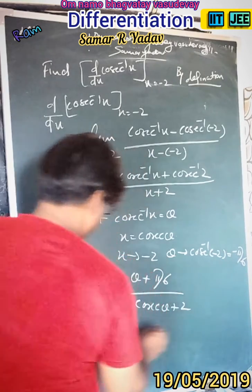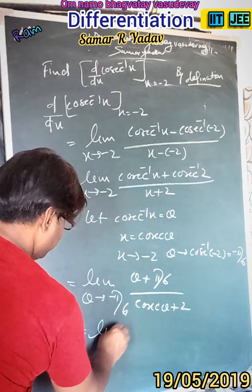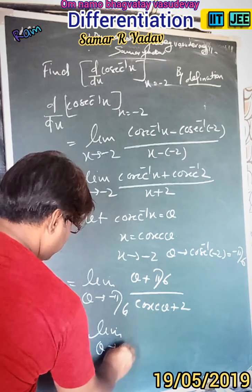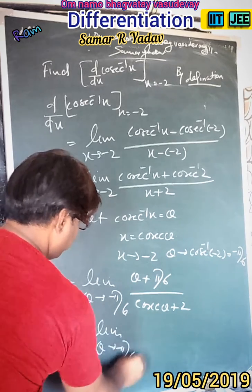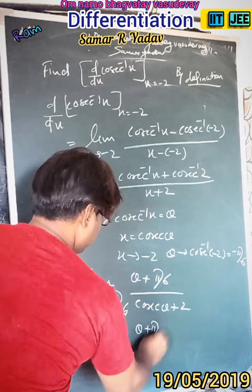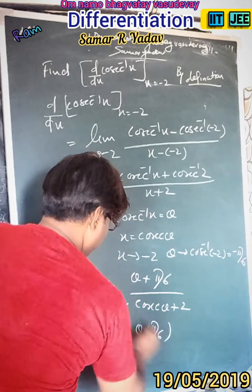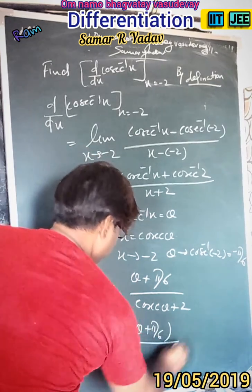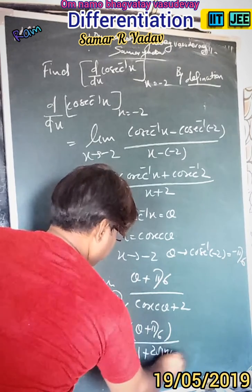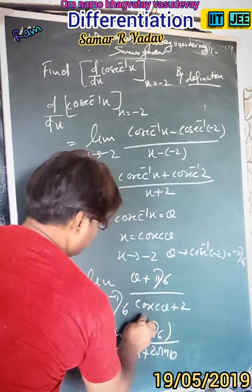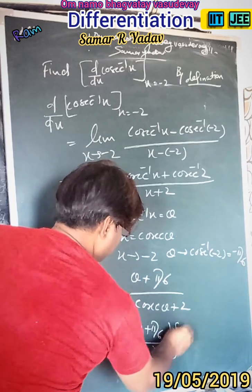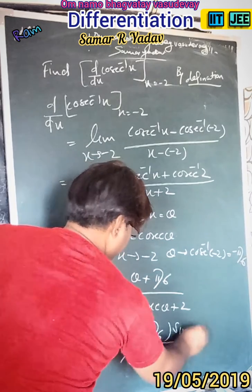This equals limit as θ tends to -5π/6 of [θ + 5π/6] upon [1 + 2sin(θ)], using the identity that cos(θ) + 2 = 1 + 2sin(θ), so that will be equal to sin(θ).